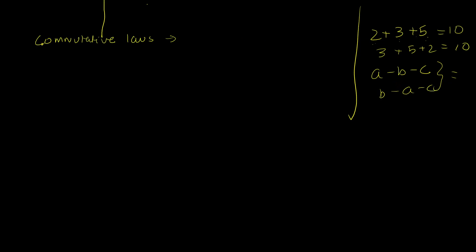In set theory, the commutative laws state that A union B equals B union A, and A intersection B equals B intersection A. Both hold for any number of sets.